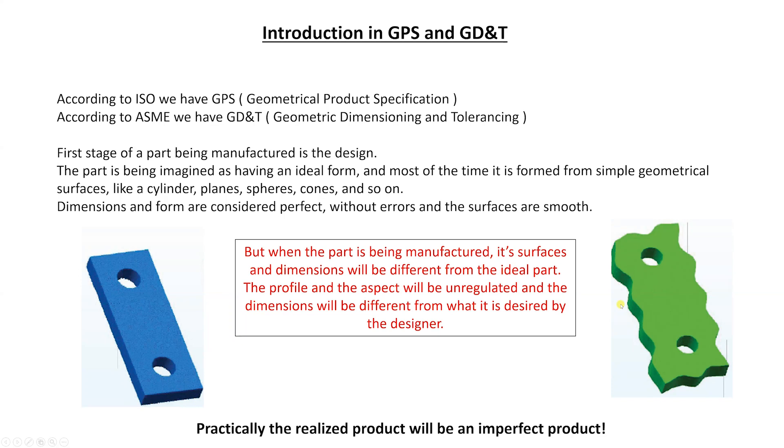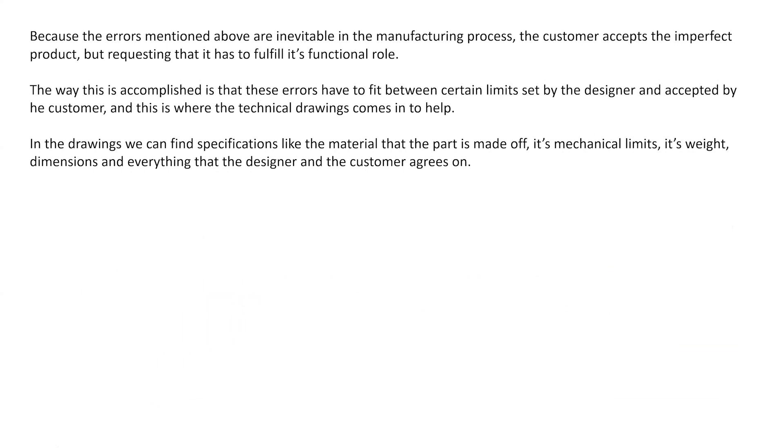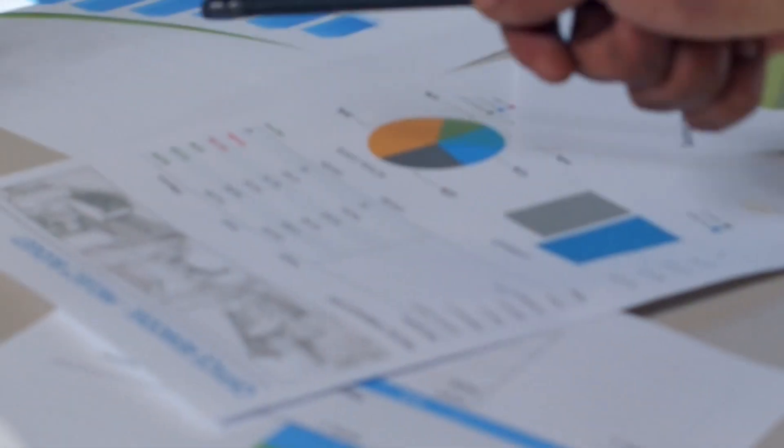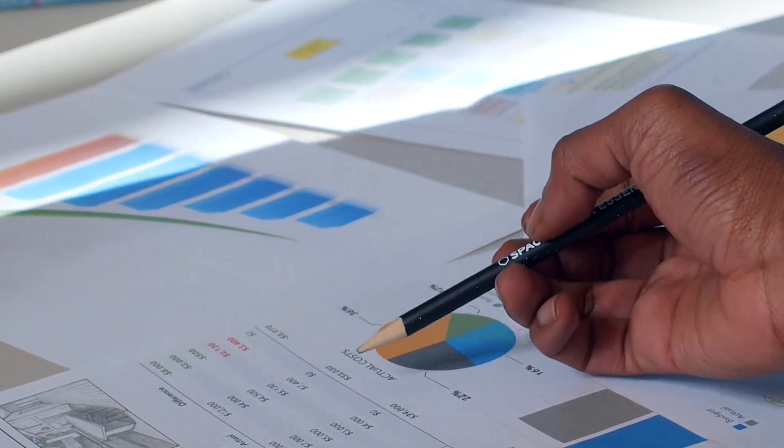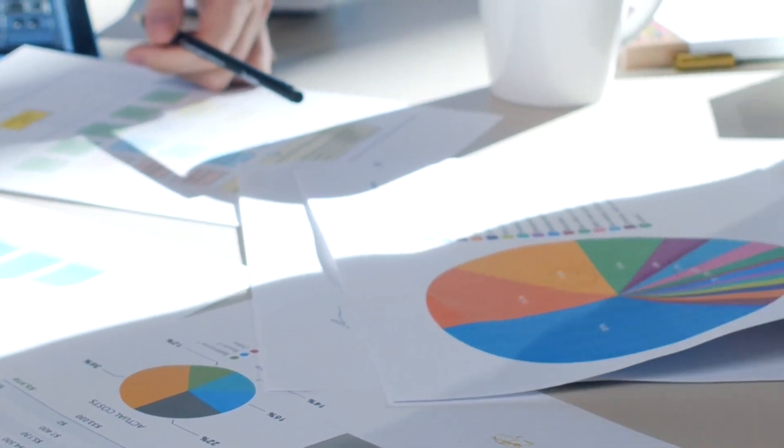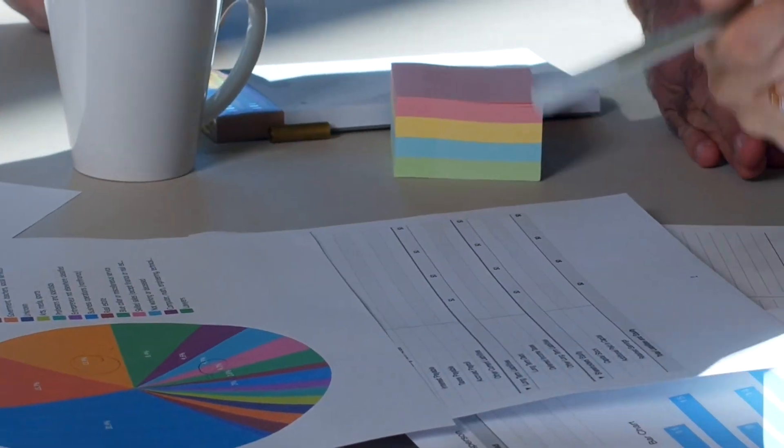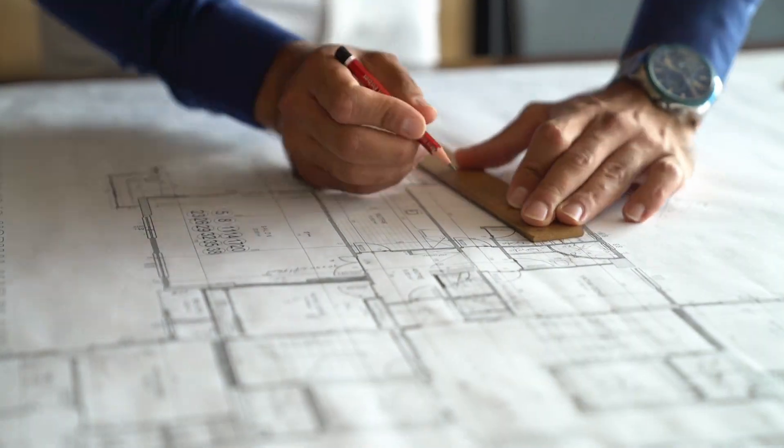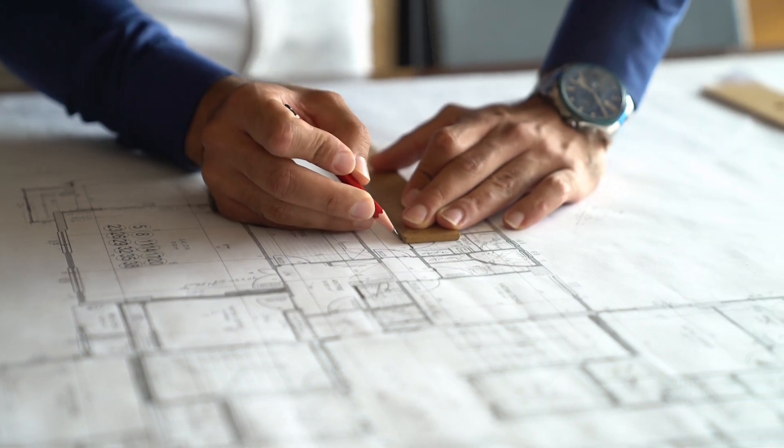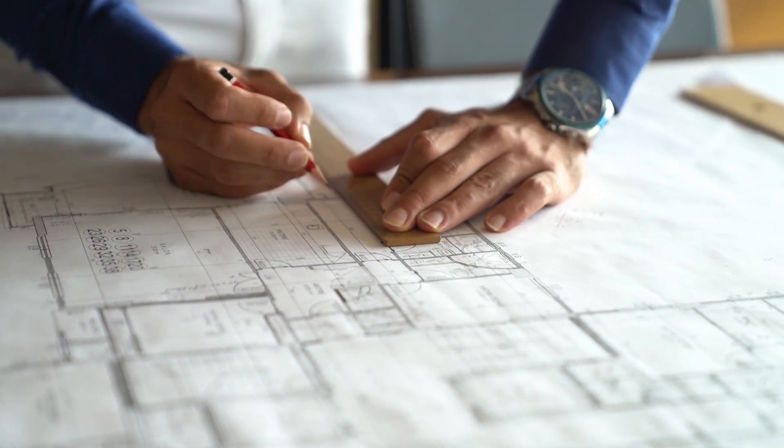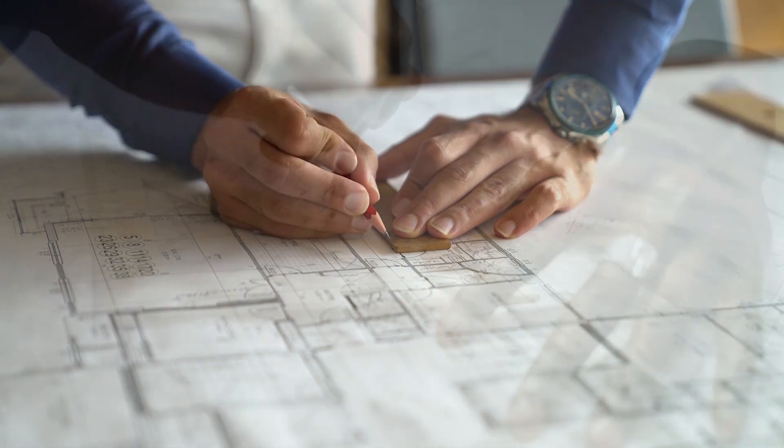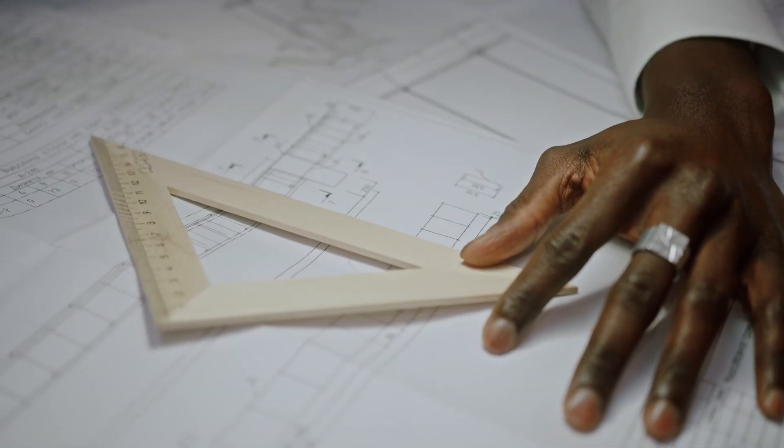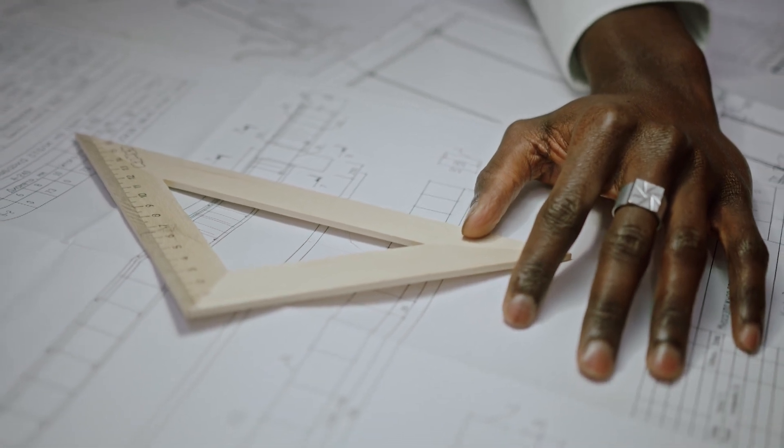Practically the realized product will be an imperfect product. Because the errors mentioned above are inevitable in the manufacturing process, the customer accepts the imperfect product but requesting that it has to fulfill the functional role. The way this is accomplished is that the errors have to fit between certain limits set by the designer and accepted by the customer.